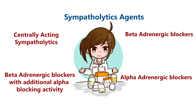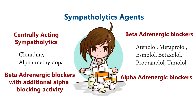Centrally Acting Sympatholytics include Clonidine and Alpha Methyldopa. Beta Adrenergic Blockers include Atenolol, Metoprolol, Esmolol, Timolol, Propranolol, etc.